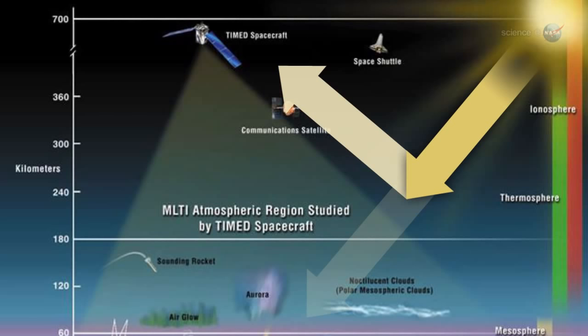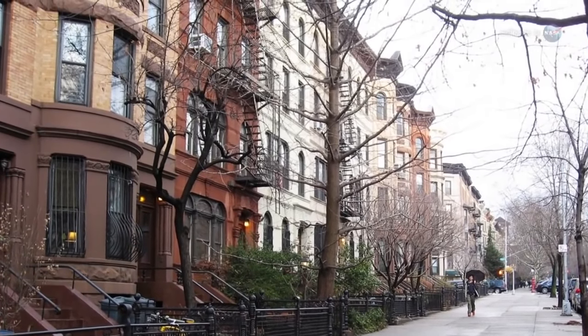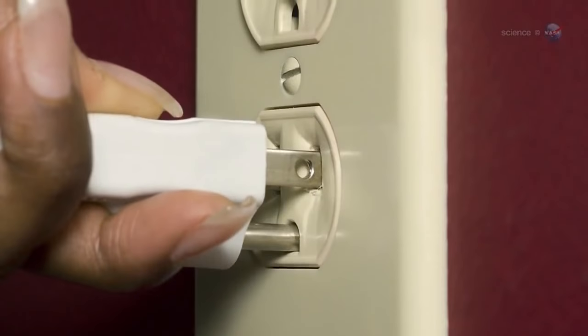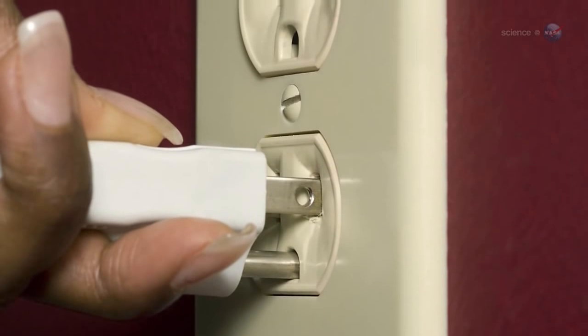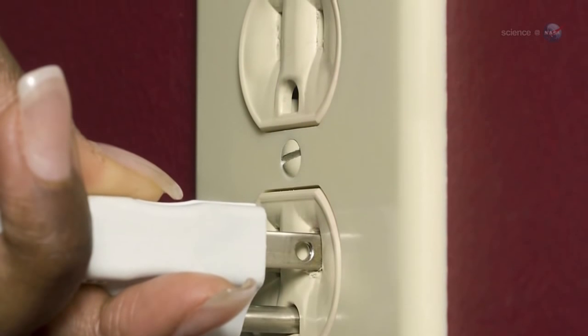In human terms, this is a lot of energy. According to the New York City mayor's office, an average New York household consumes just under 4,700 kilowatt hours annually. This means the geomagnetic storm dumped enough energy into the atmosphere to power every home in the Big Apple for two years.